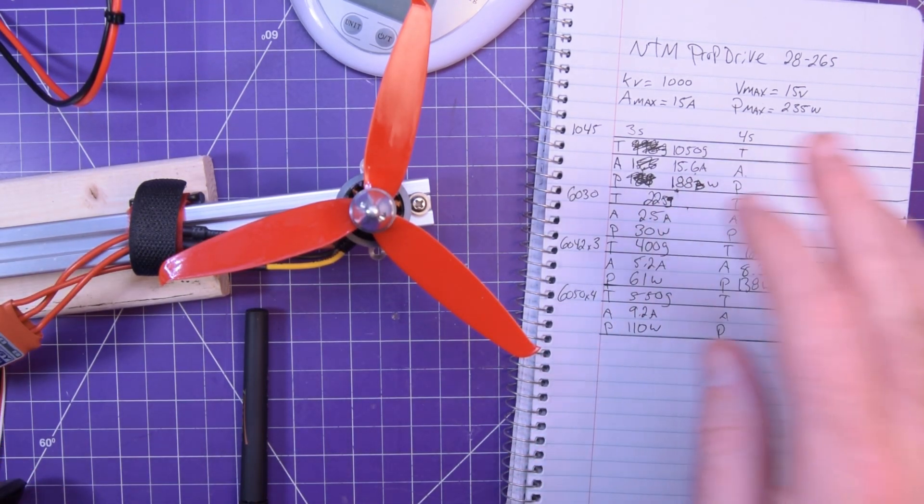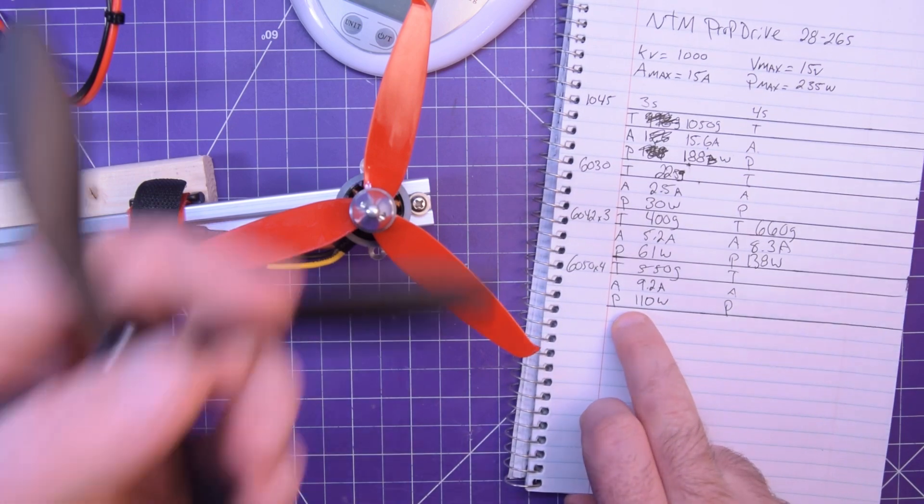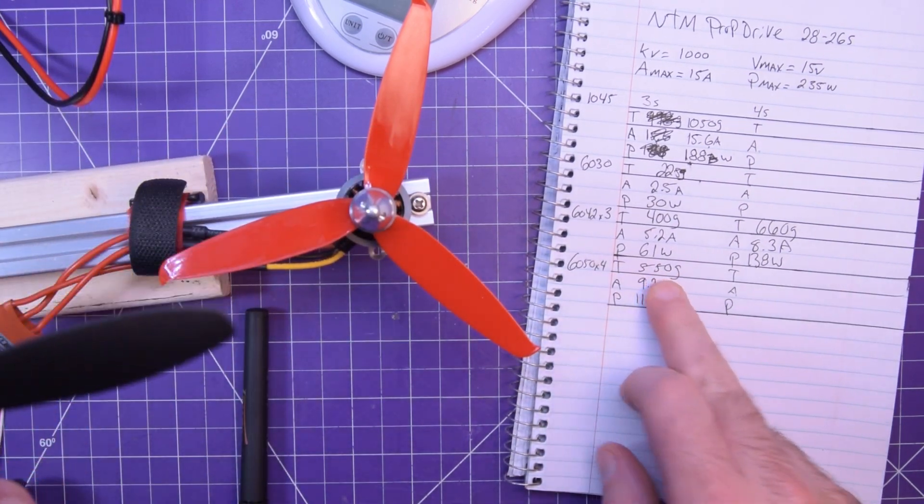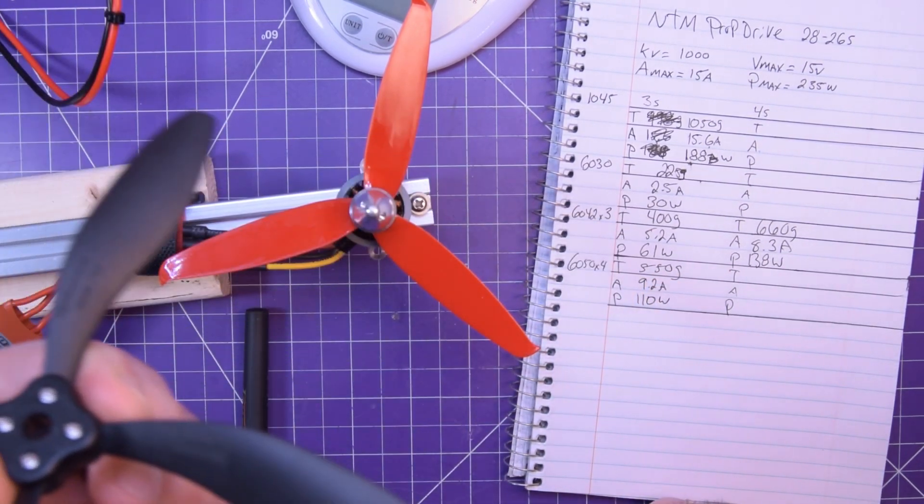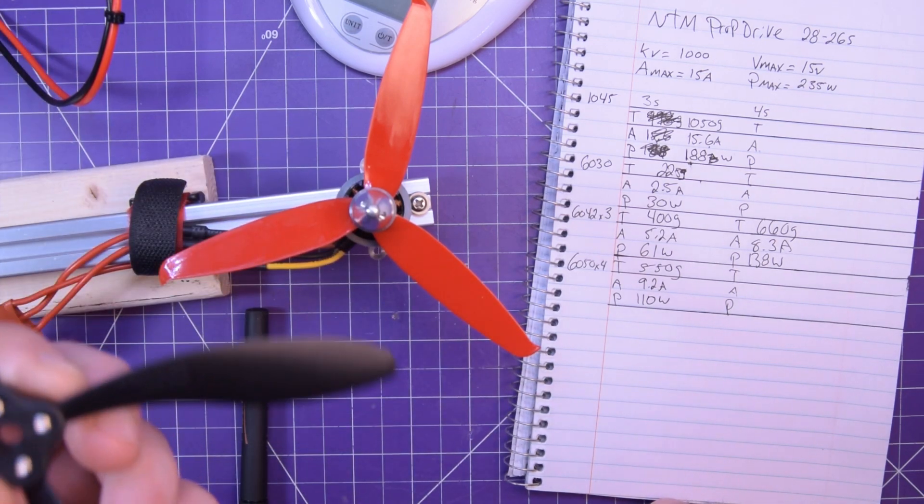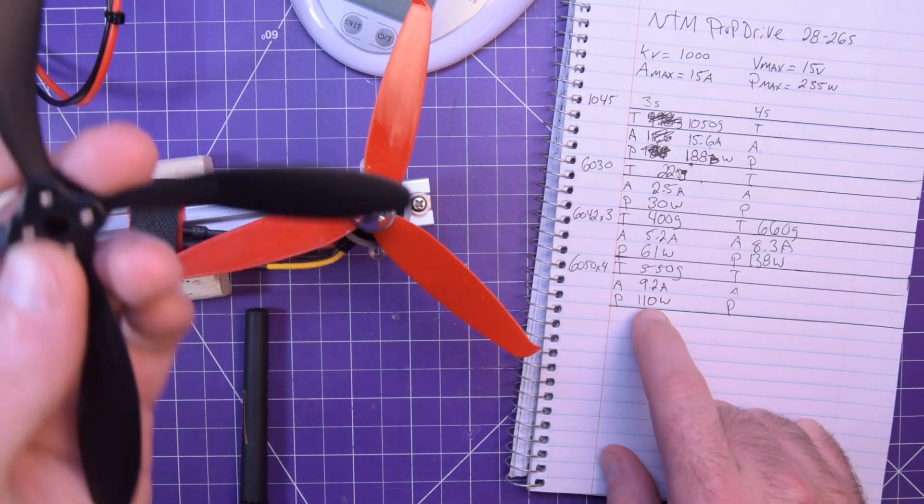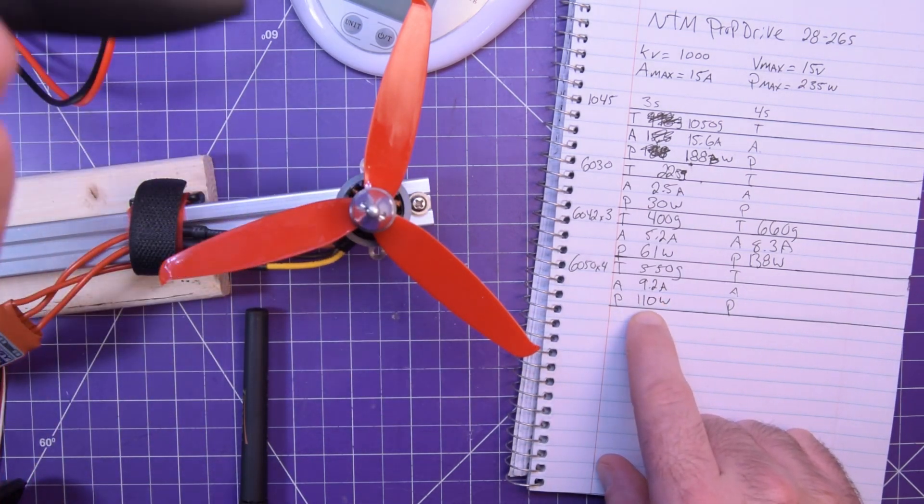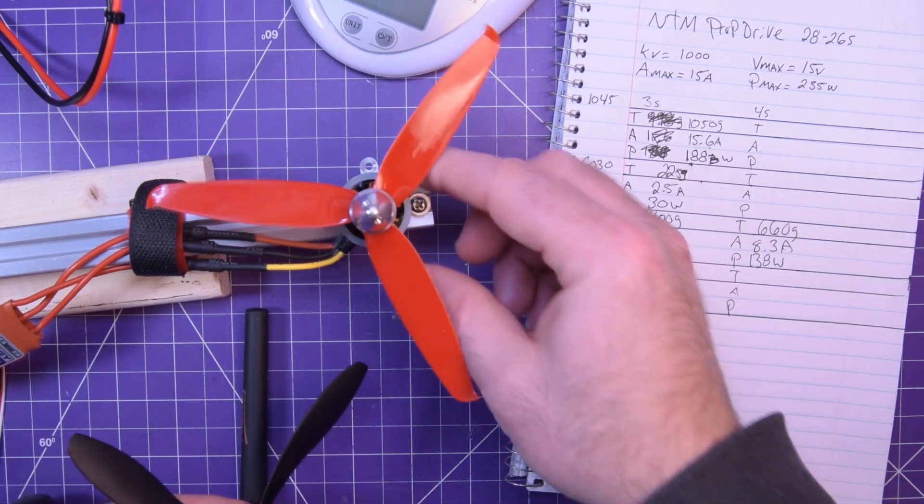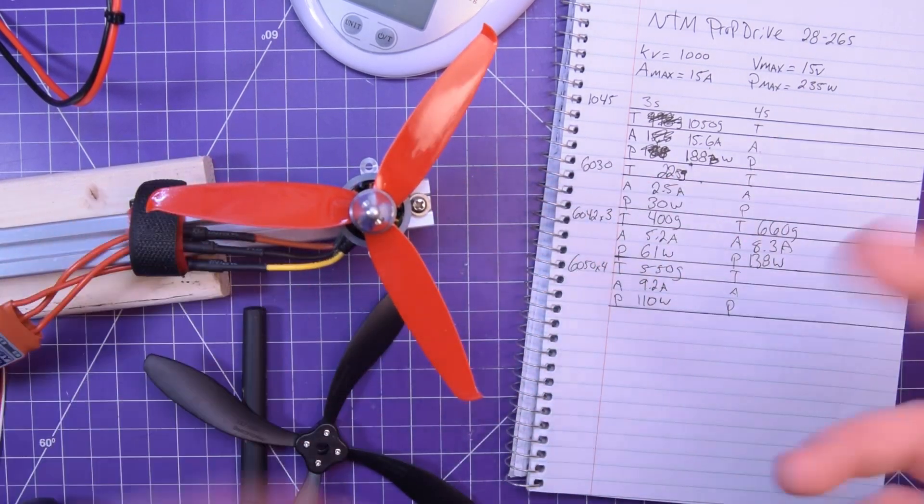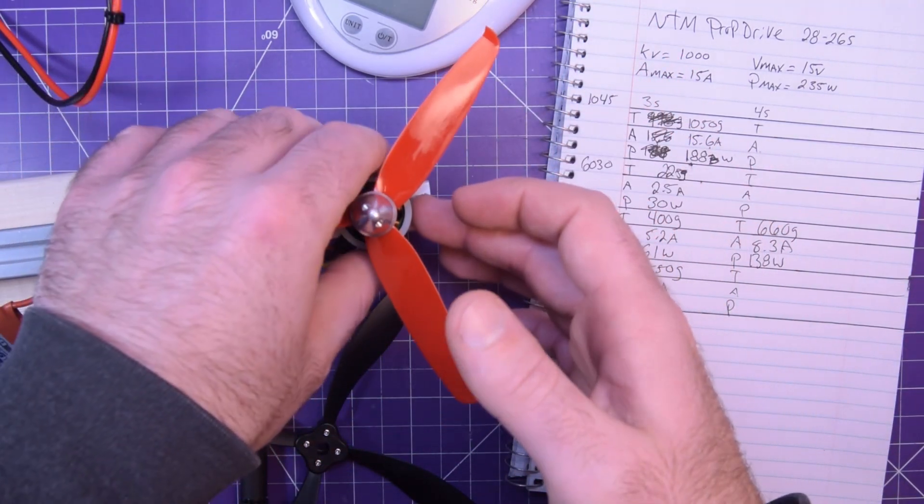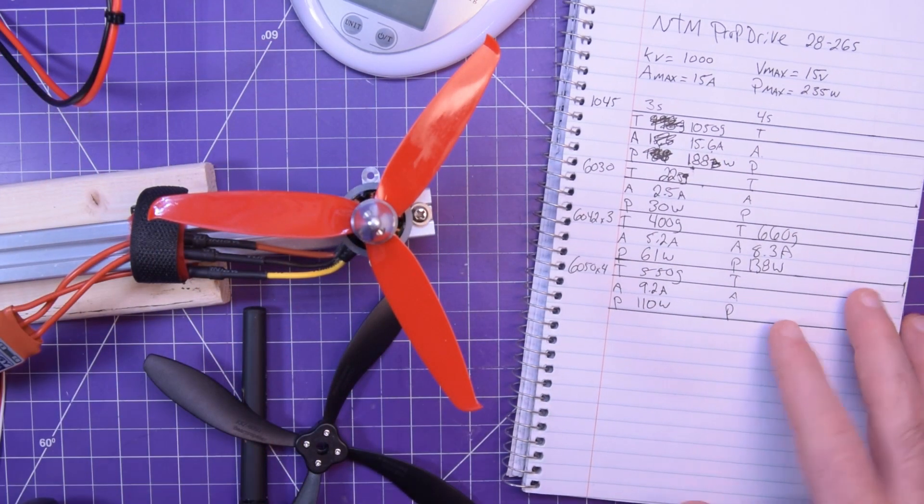Then this one here, 550 grams of thrust. If you see, it's not even that much more thrust, 550. And it doesn't fit. I have to modify it. 9.2 amps, 110 Watts. So still this motor is going to be running cool. But really what this is boiling down to is for a six inch prop, these are not the correct motors for it. It is what it is.